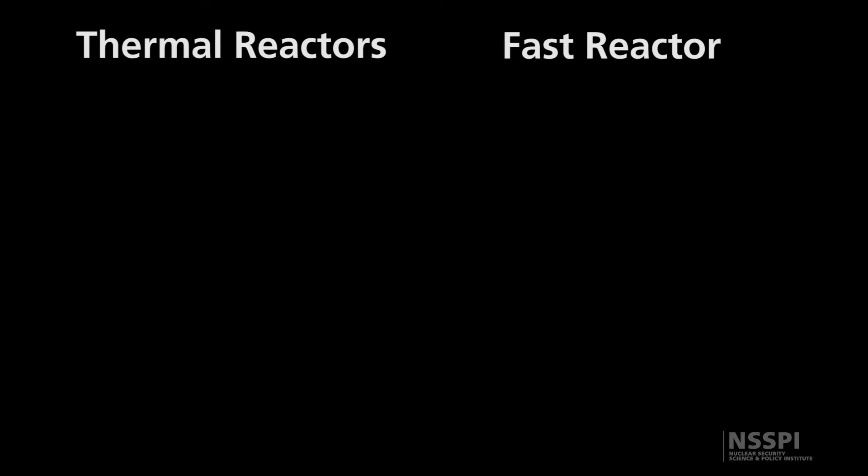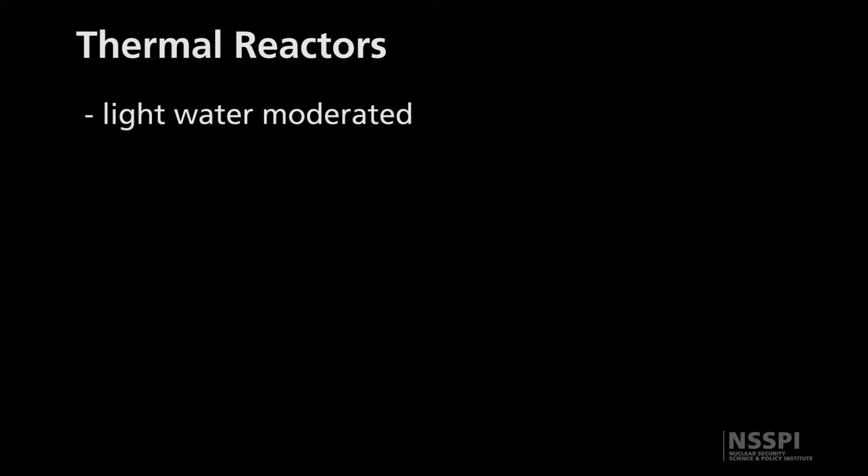Reactors generally break into two main categories: thermal reactors and fast reactors. Thermal reactors principally operate off of neutrons that are moving slowly inside the system, while fast reactors operate off of faster moving neutrons. In order to slow neutrons down, we use what's called a moderator. The most common moderator used in the world is light water — neutrons bounce off the water in the reactor, and every time they bounce, they lose energy and slow down.